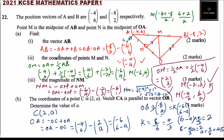Solving, we find a = 9/2, which is the same as 4.5. So the value of a is 4.5.